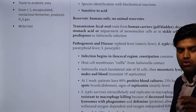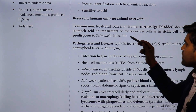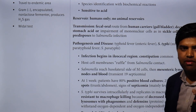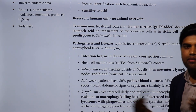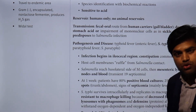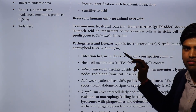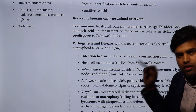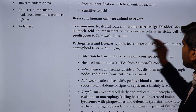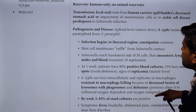Transmission is via fecal-oral route from human carriers; the gallbladder can serve as a carrier reservoir. Decreased stomach acid or impaired mononuclear cell function predisposes to infection. In sickle cell disease, impaired mononuclear cells predispose to Salmonella infection. While Staphylococcus aureus is the most common cause of osteomyelitis in all other patients, in sickle cell anemia, Salmonella is the most common cause of osteomyelitis.